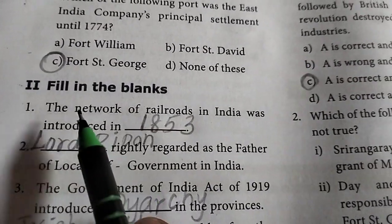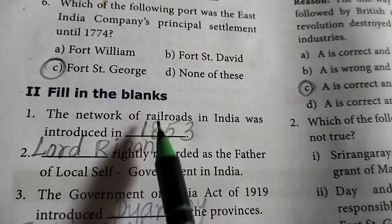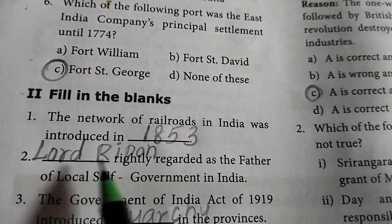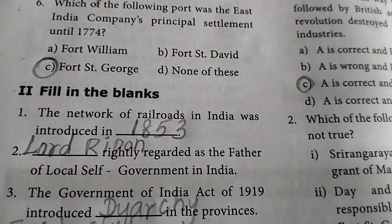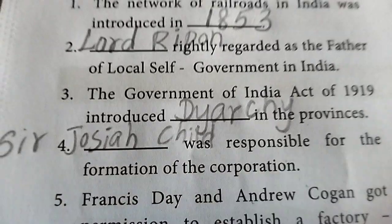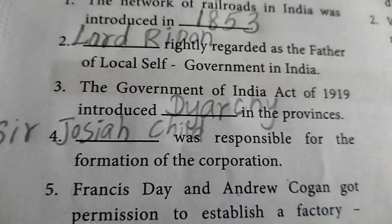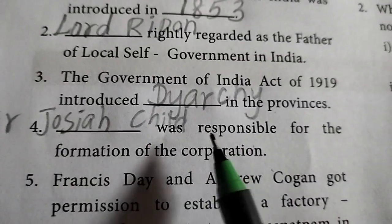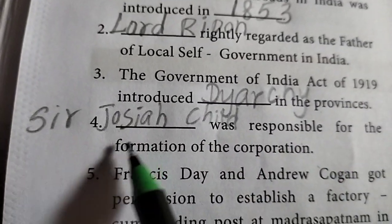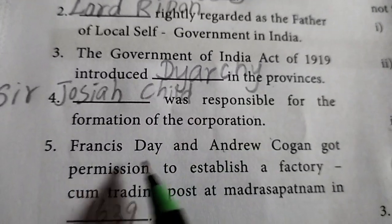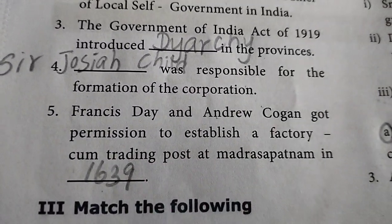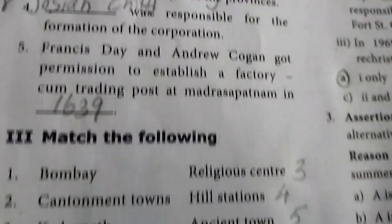Fill in the blanks. First answer is 1853. Second is Lord Ripon. Third one is DRC. Fourth one is Sir Josiah Child. Fifth one is 1639.